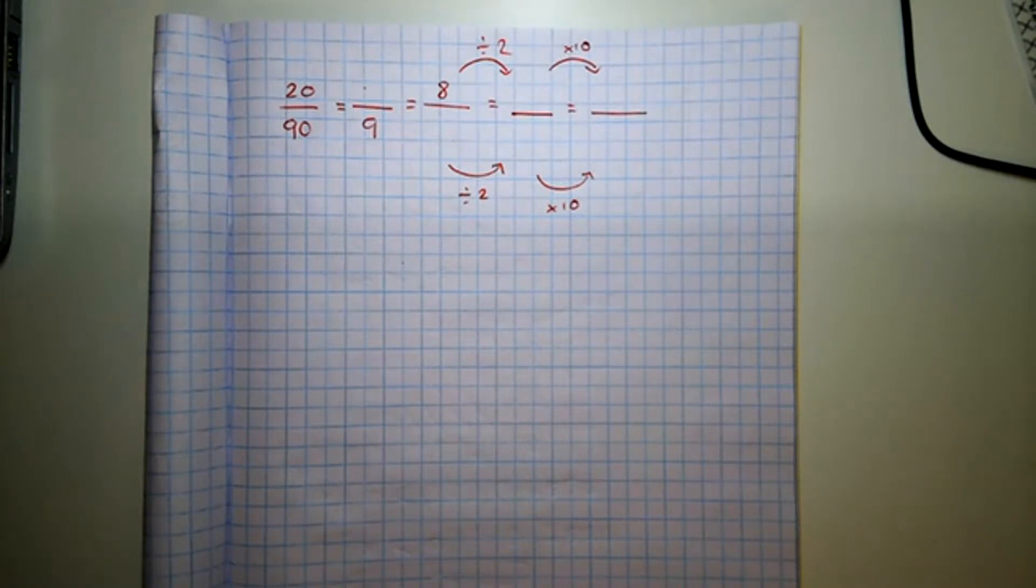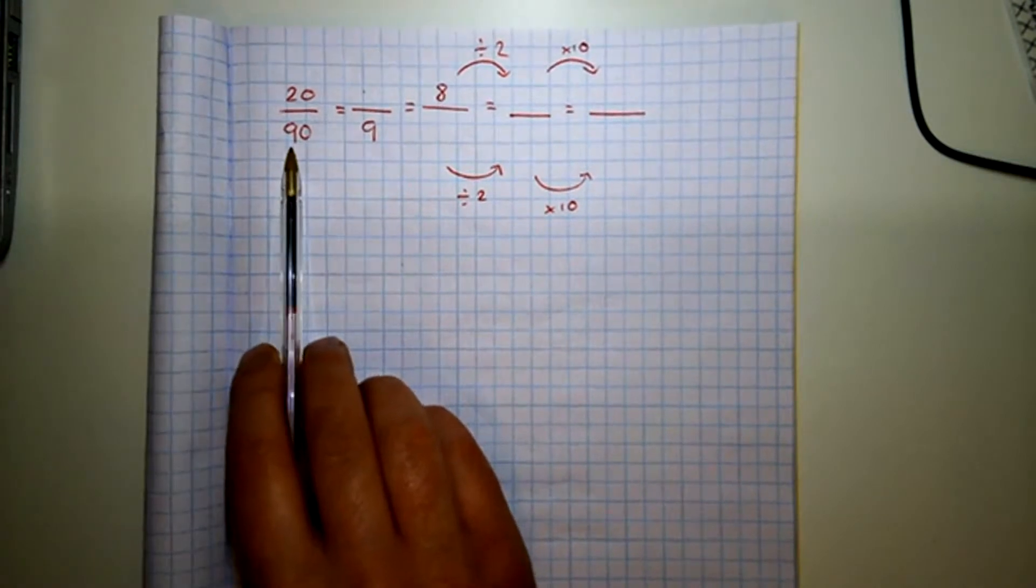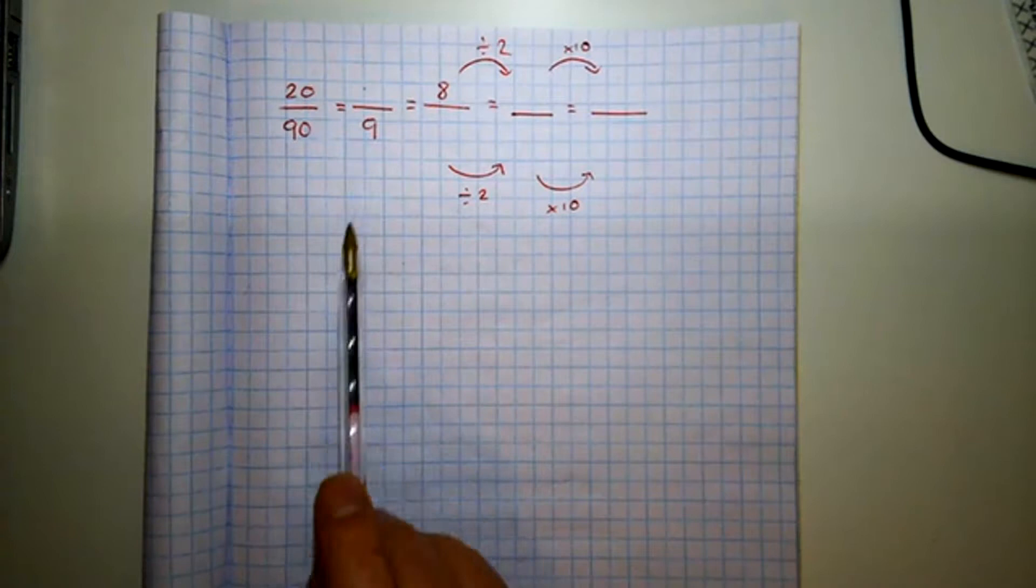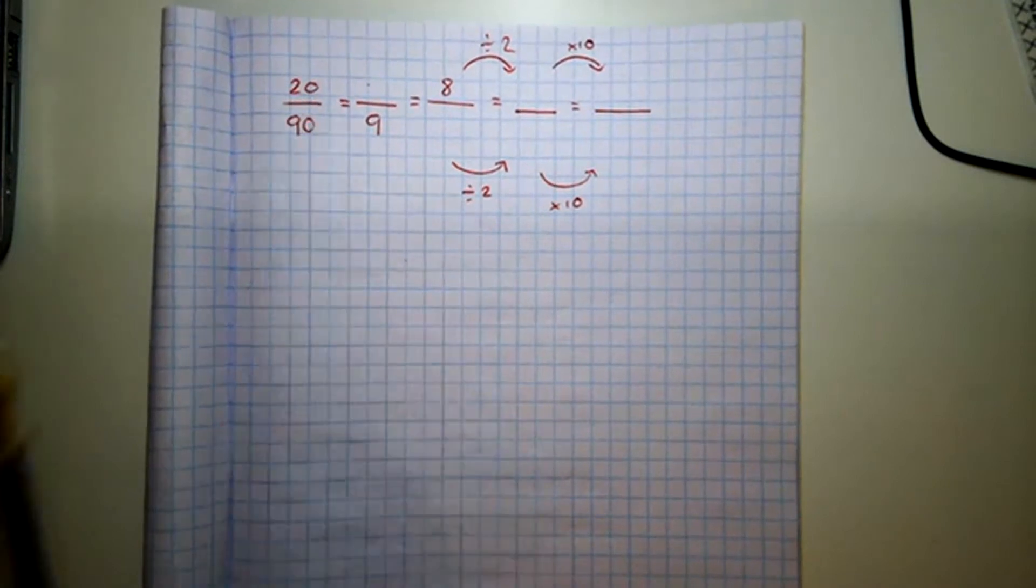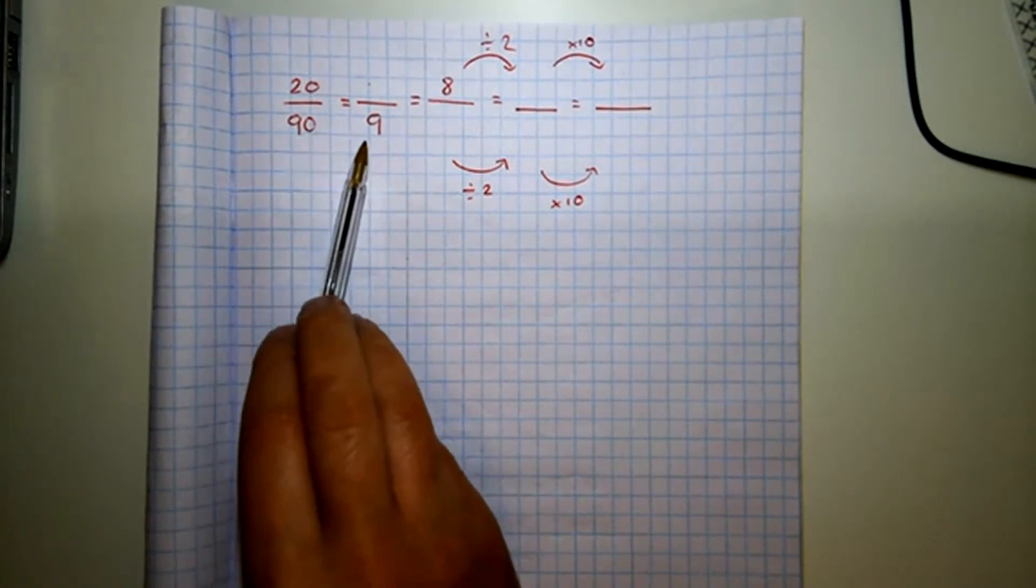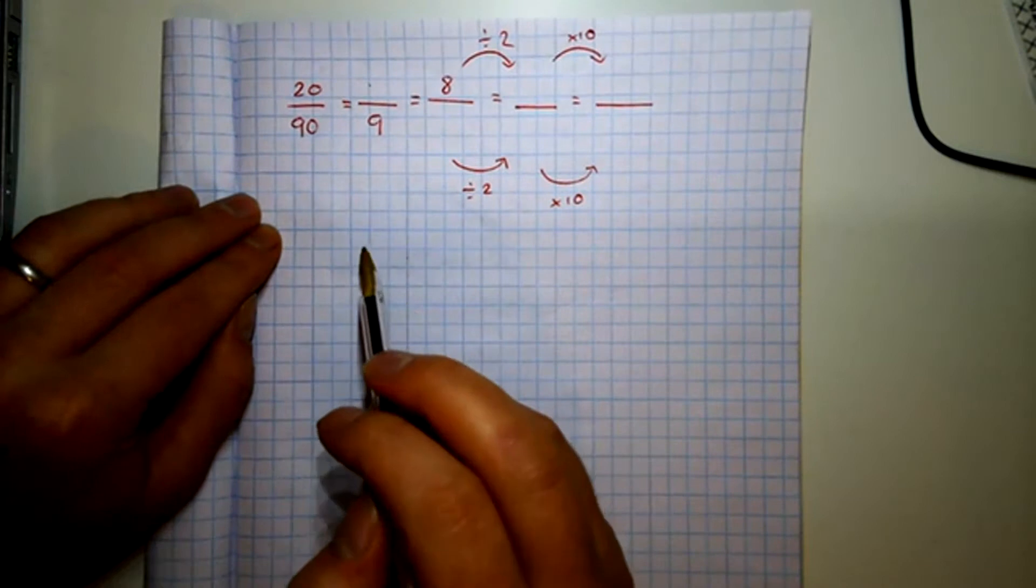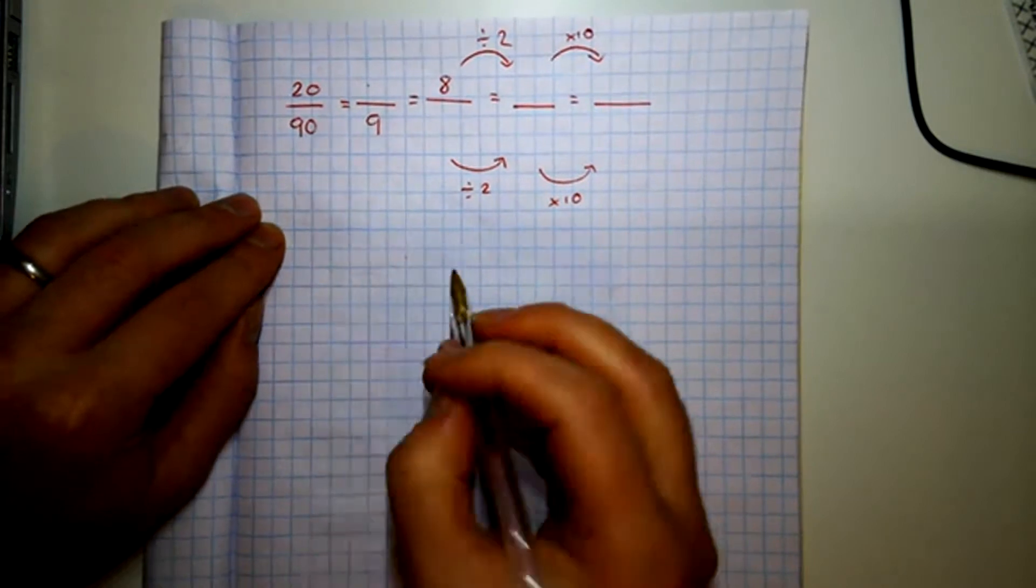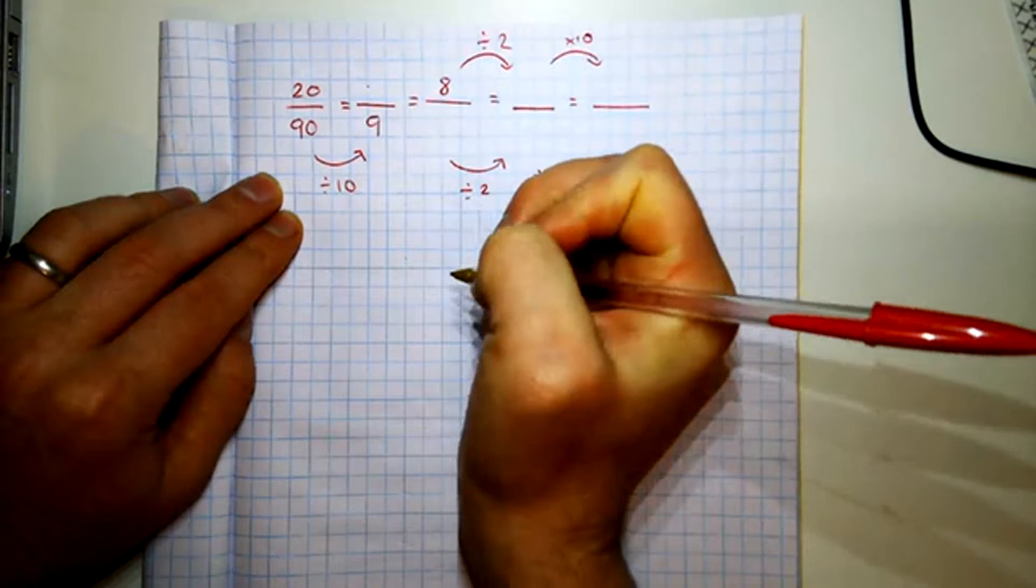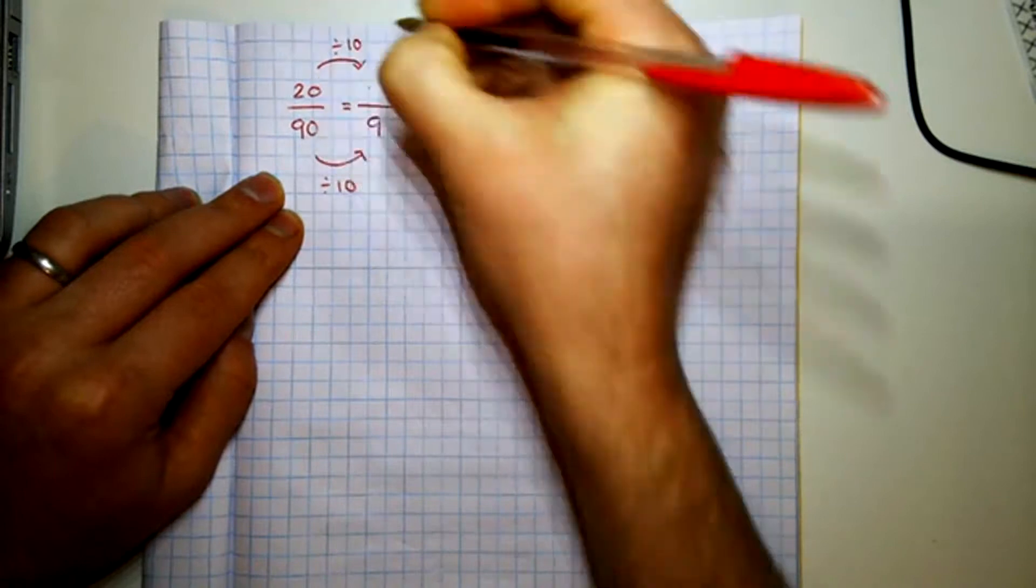Okay, so here's fraction 20 over 90. Now if we had one whole one we could split it into 90 pieces and they would be 90ths, and if we shaded in 20 of them we would have 20 90ths. But instead of splitting that whole one into 90 equal pieces, we split it into nine equal pieces. Then what would be, how many pieces would be shaded in for it to be equal? And the way we do that is we think, well how do you get from 90 to 9? And you get there by dividing by 10.